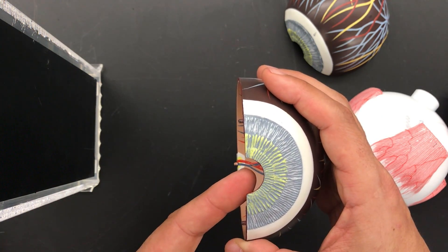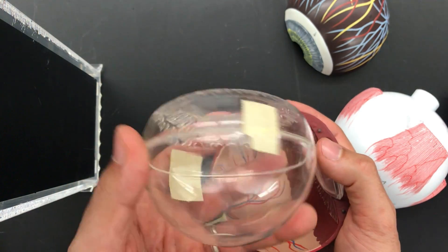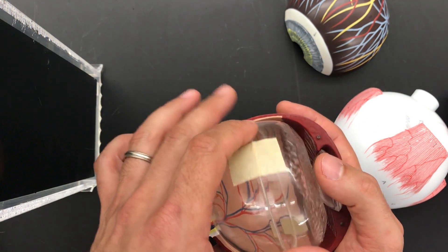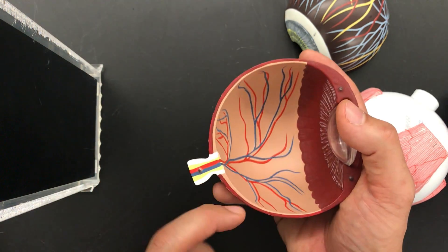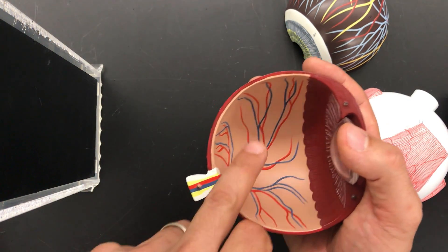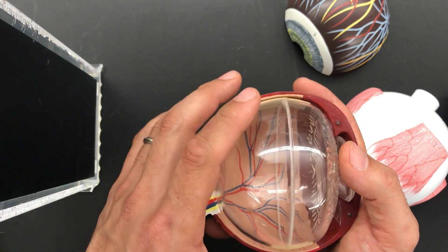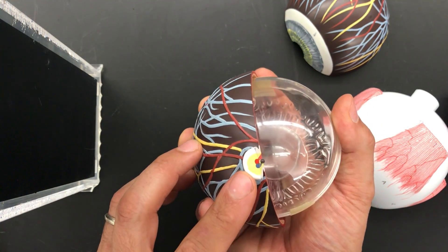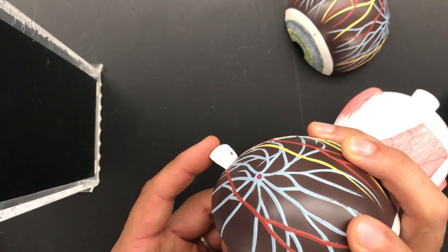This plastic here represents the fluid - this is your vitreous humor that would be in here. Your optic nerve is posterior here. This is the optic nerve.